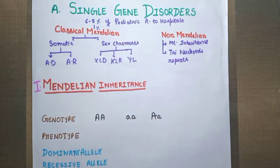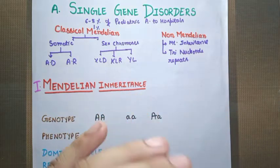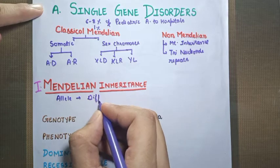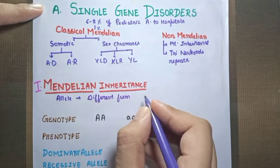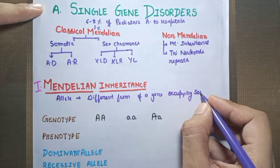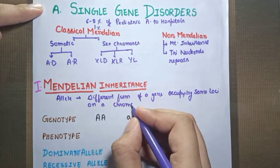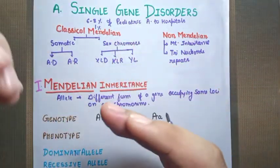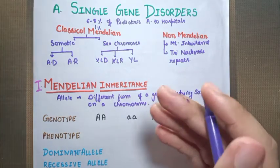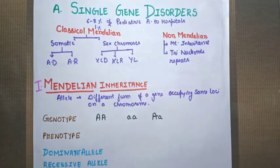Mendelian disorders may be due to a single gene defect. The allele which expresses itself is called dominant, while the one which remains unexpressed in heterozygous condition is called recessive. An allele is a different form of a gene occupying the same loci or position on a chromosome. Using the analogy of two identical houses with 120 rooms — in room number four there are identical twins, one with black hair and one with white hair. These are different forms of the gene, one expressing black and one expressing white, both occupying the same loci.